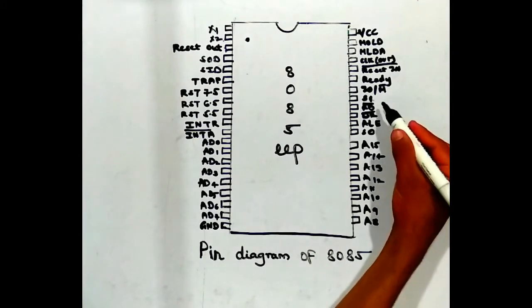The 31st and 32nd pins are WR bar and RD bar. WR bar is used to write data to memory, and RD bar is used to read data from memory.